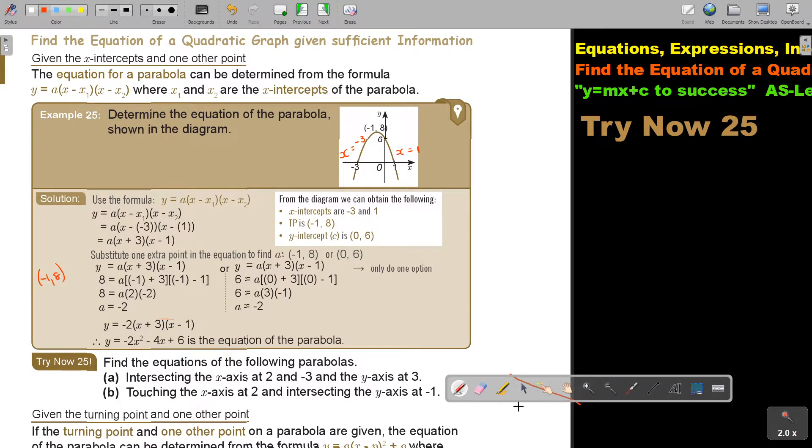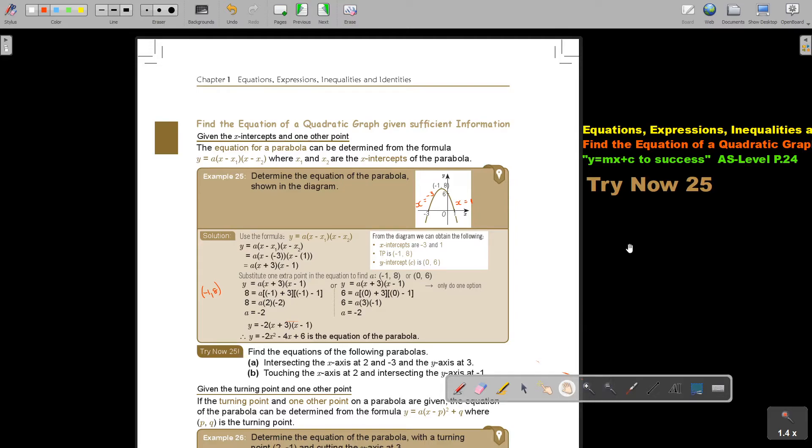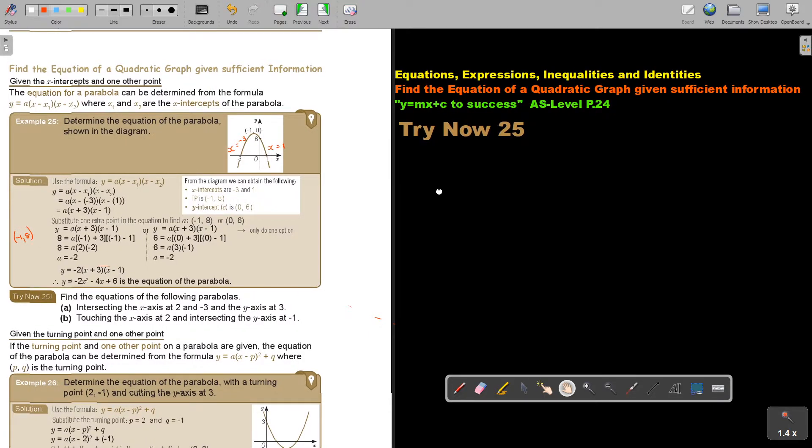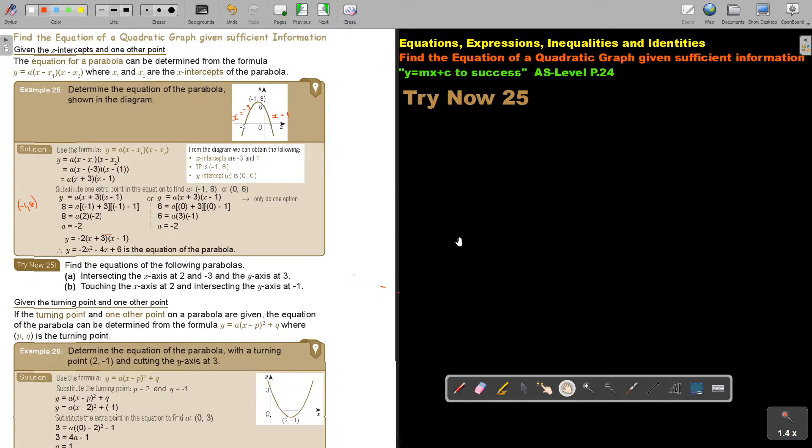Now let's just make it smaller again. Try now 25. Find the equation of the following parabolas. I think you can only... I gave you A and B now. I think you can only in this video, I will only do number B. I think A is easy, but let me do number B for you.